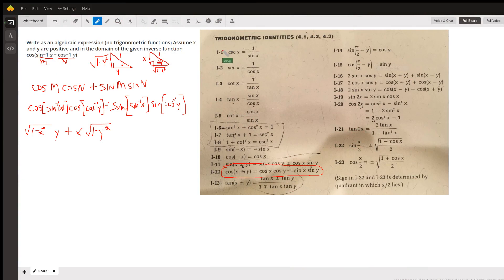Okay, let's see if we can make some sense of this. We're trying to find the cosine of the difference of two angles.